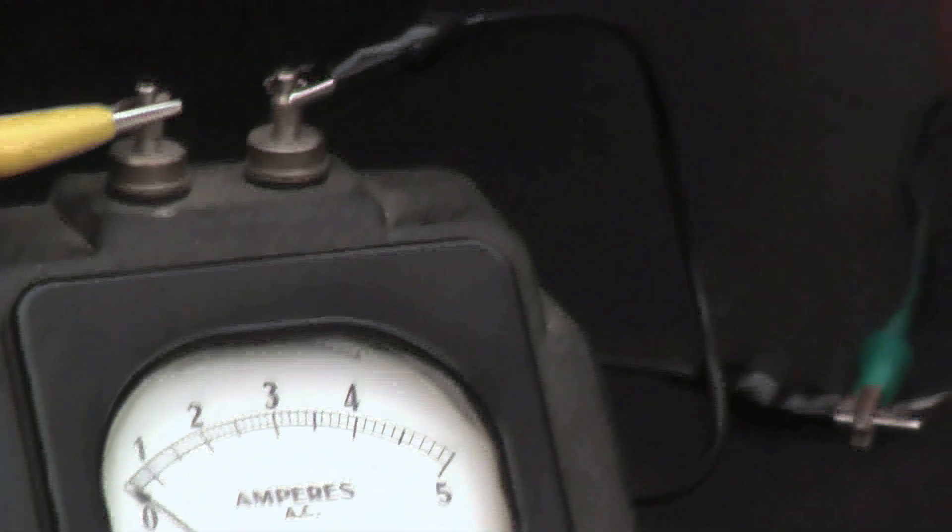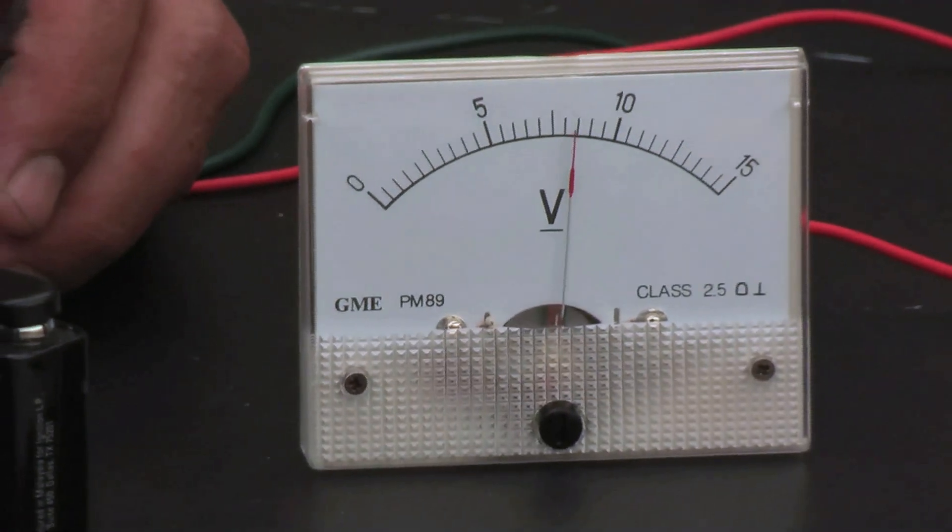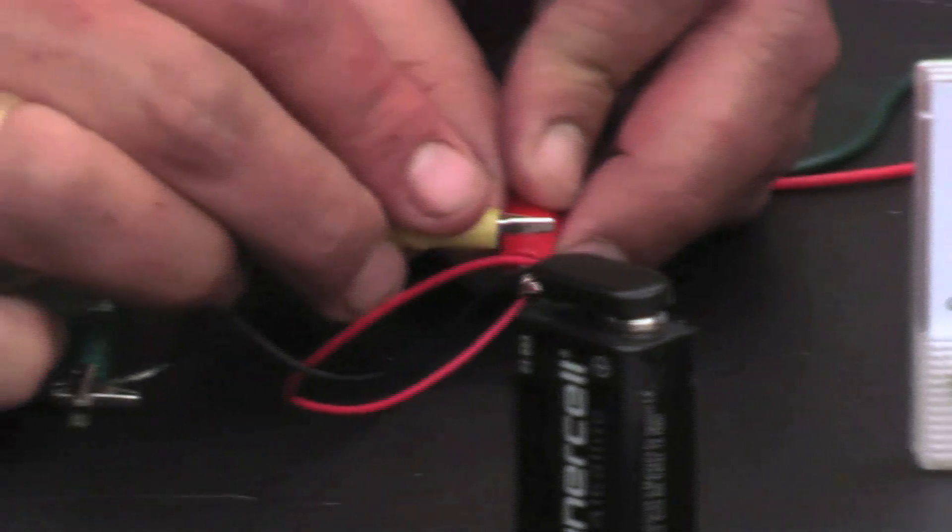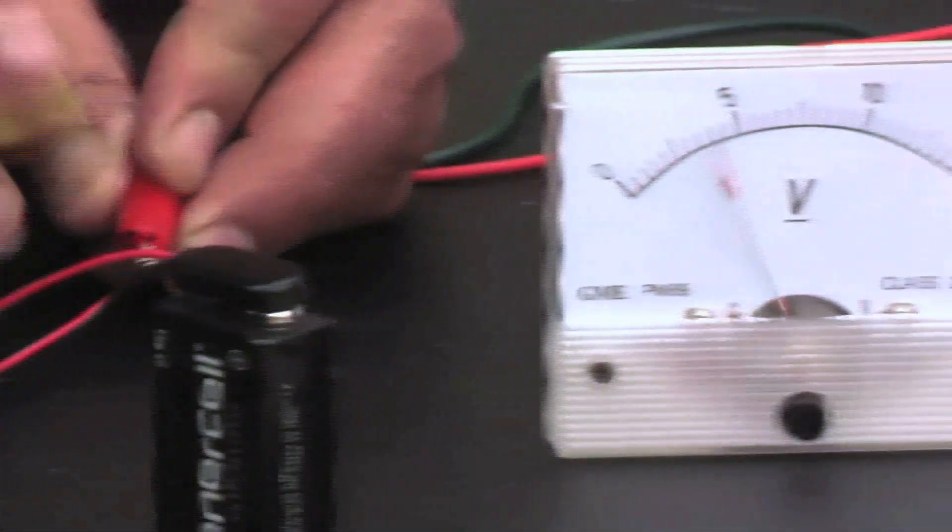So when it's not connected, we get 9 volts, but when this battery is connected and it's trying to deliver a huge amount of current, what happens? The voltage drops all the way down to 1 volt. Let's see what's going on here.